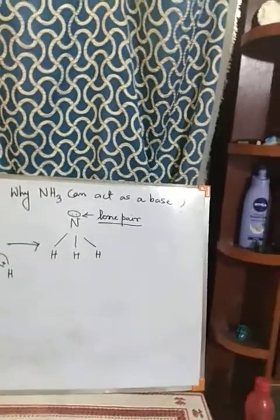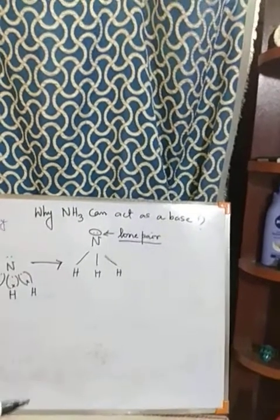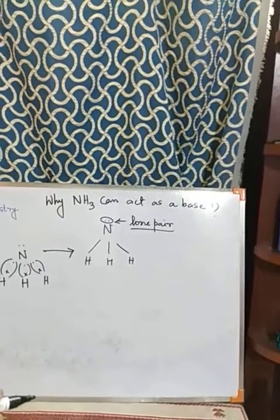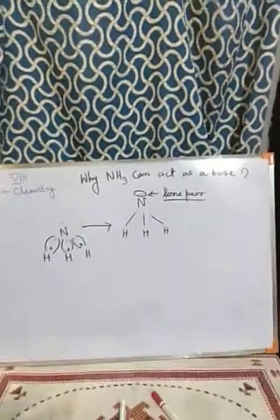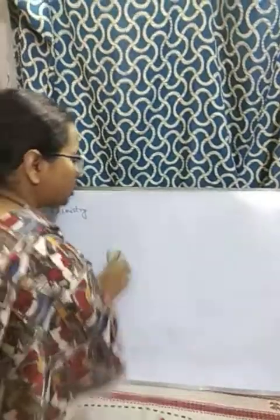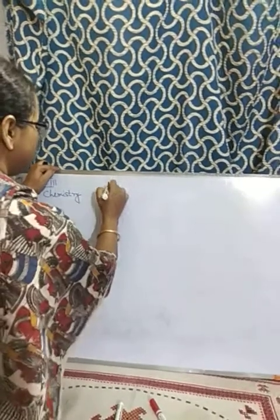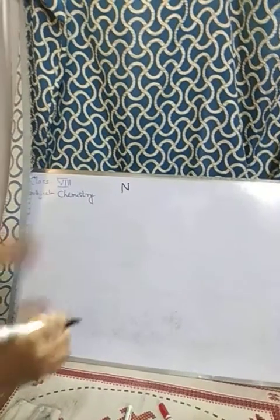All substances which have this kind of available lone pair can be considered as a base. Now let us come to the neutralization reaction. This is a type of double displacement reaction. One type we already discussed in the last video was precipitation reaction, and today we are going to discuss neutralization reaction.